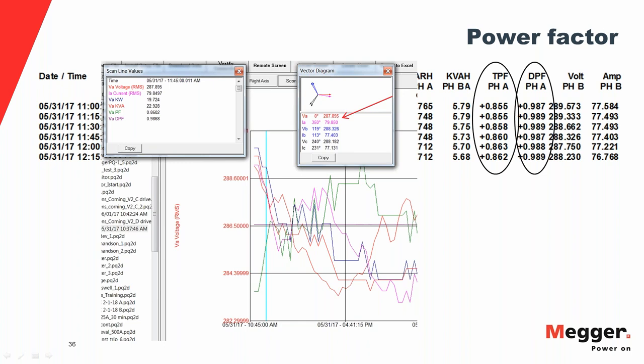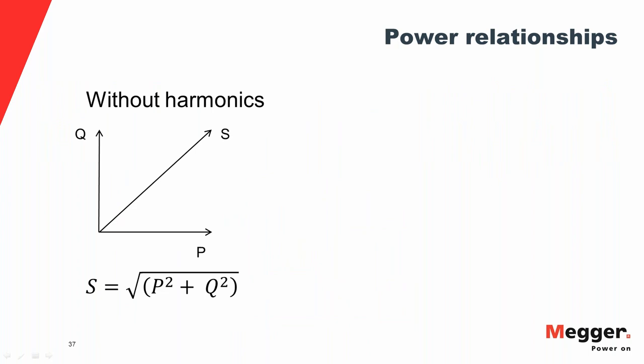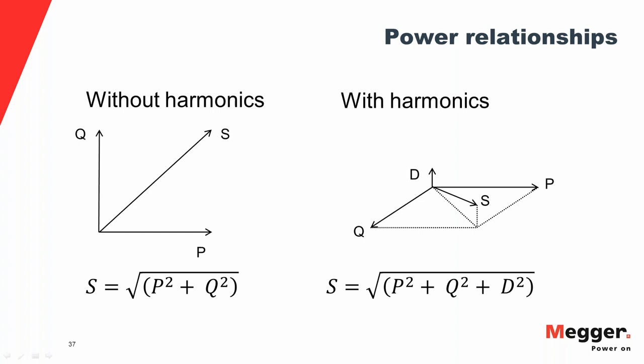In a harmonics-free system, the familiar power triangle relates apparent power S, real power P, and reactive power Q. When harmonics are present in the system, an additional term D appears in the equation, modifying the relationship between these power quantities.